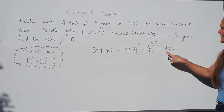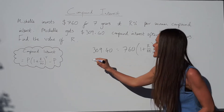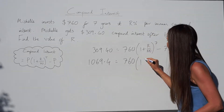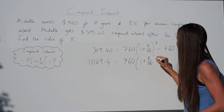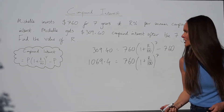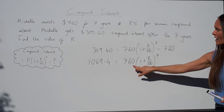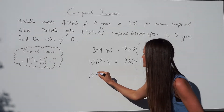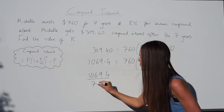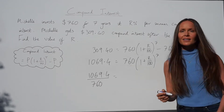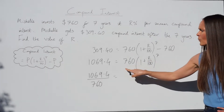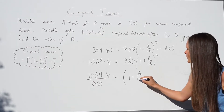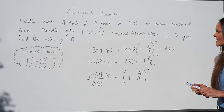First, add 760 to both sides of the equation. The left-hand side becomes 1069.40. On the right-hand side the minus 760 and plus 760 cancel, leaving 760 × (1 + r/100)⁷. The opposite of multiplying by 760 is dividing, so divide both sides by 760. On the right-hand side, dividing by 760 gives 1, leaving (1 + r/100)⁷.